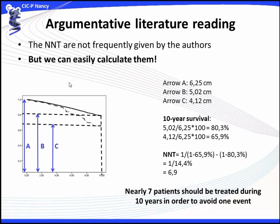For curve B, dividing arrow B by arrow A gives a 10-year survival of 80%. For arrow C, dividing 4.12 by 6.25 gives a 10-year survival of 66%. So the number needed to treat is 1 divided by (1 minus 66%) minus (1 minus 80%), which gives 1 over 14%, approximately 7 patients needed to be treated during 10 years to avoid one event. This shows how to calculate the NNT from a survival analysis when authors do not provide the numbers in the paper.